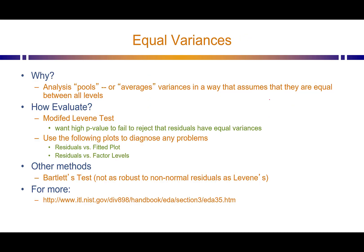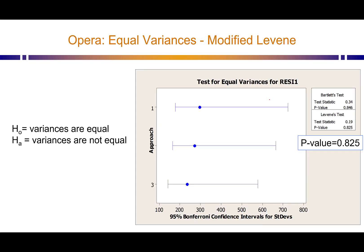For equal variances, there are several tests available. We'll talk about the modified Levene test, though different stats packages may recommend different tests. The null hypothesis for the modified Levene test is that the variances are equal; the alternative is that they are not. A high p-value means we fail to reject the null, so we can conclude the variances are equal enough — which means we're meeting the assumptions.